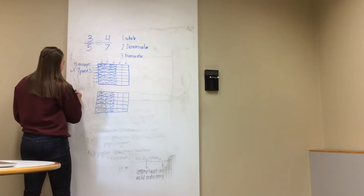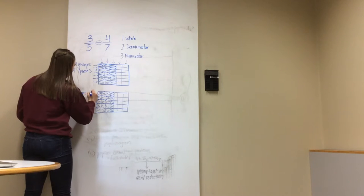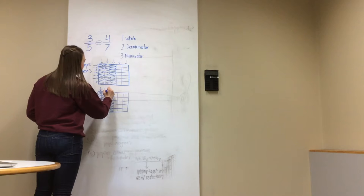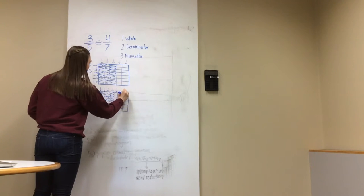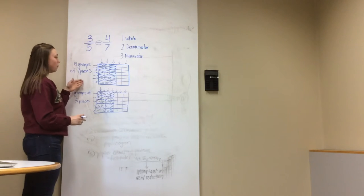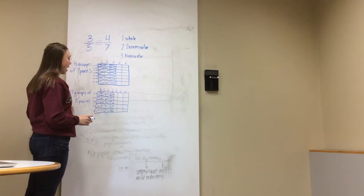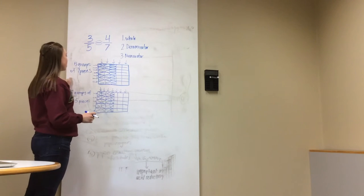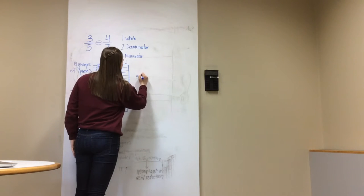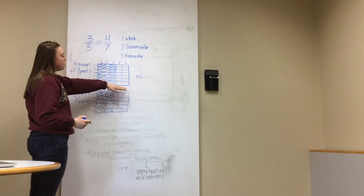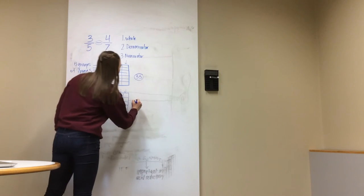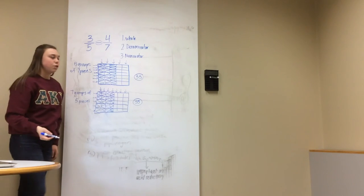Now we have 7 groups of 5 pieces. We have our 7 groups up top and then 5 in each group. Because we know that 5 groups of 7 and 7 groups of 5 are the same number — if we were to count all of these up, 5 groups of 7 is going to be 35. So if we look at just the top one, we have 35 pieces total. And we also have 35 pieces total down here, because 5 groups of 7 and 7 groups of 5 both equal 35.